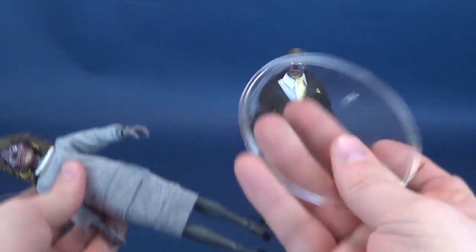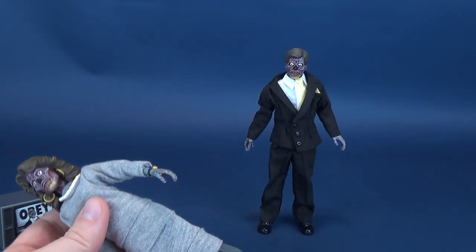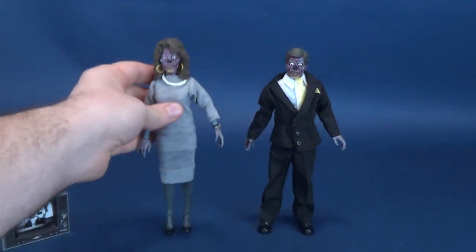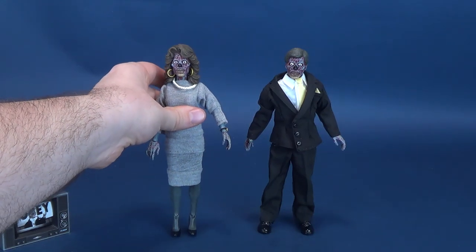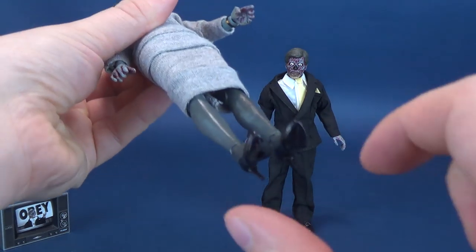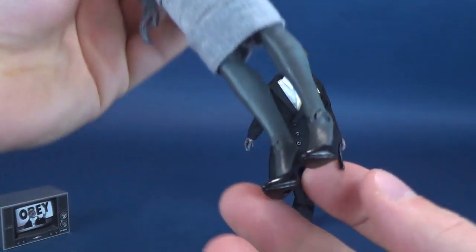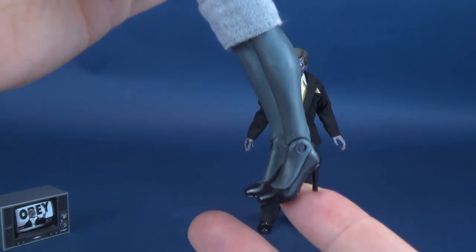One accessory that didn't come included with it is the display stand. I've simply just added that because the female alien does have some tricky, difficult time standing. It's just because the feet are really close together. And of course, she's also wearing high heels. That doesn't help the matter either.